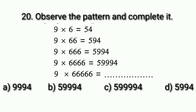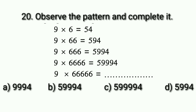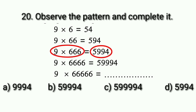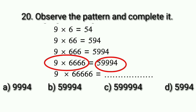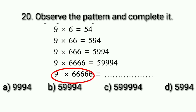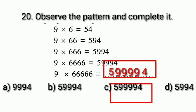Question number 20 is: observe the pattern and complete it. When 9 is multiplied by 1 six, the answer is 54. When multiplied by 2 sixes, the answer has one 9 between 5 and 4. When multiplied by 3 sixes, two 9s appear between 5 and 4. When multiplied by 4 sixes, three 9s appear between 5 and 4. Following the same pattern, when 9 is multiplied by 5 sixes, there will be four 9s between 5 and 4, which matches option C. So we put a tick at option C.